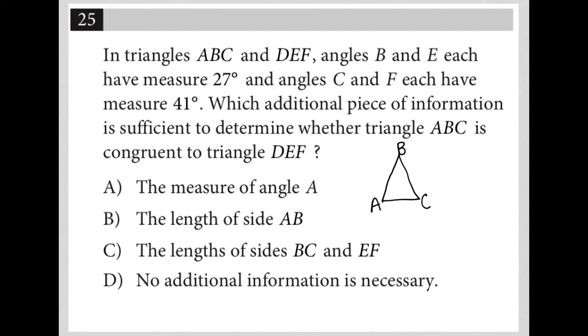We were told that B is 27. And we were told that C is 41, which means we can figure out what choice A is or angle A in a second.